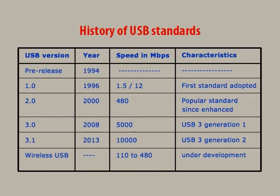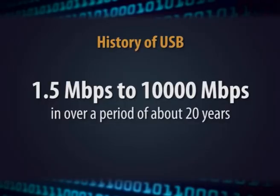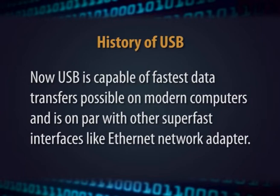We will discuss these further in later sections. The following table gives a brief history of USB standards and their years with salient characteristics. It is clear from the table that the standard has evolved significantly from a modest speed of 1.5 megabits per second to 10,000 megabits per second over a period of about 20 years. Now USB is capable of the fastest data transfers possible on modern computers and is on par with other super fast interfaces like ethernet network adapters.